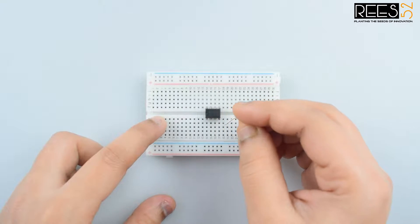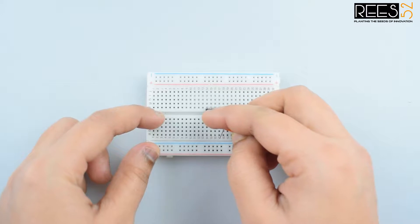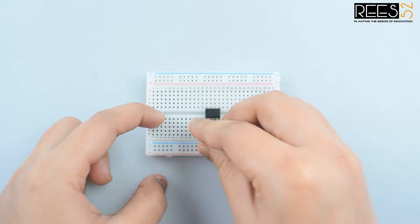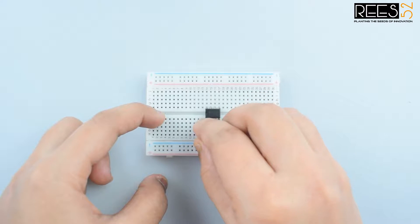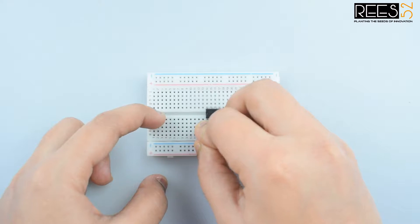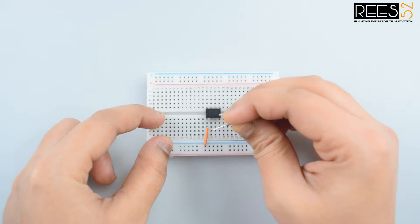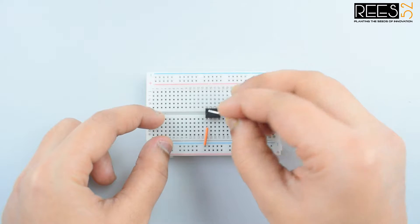Then connect pin number 1 of the 555 timer IC to the ground rail on the breadboard. Now connect pin 2 and pin 6 of the IC with each other.